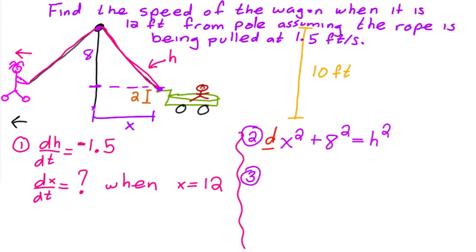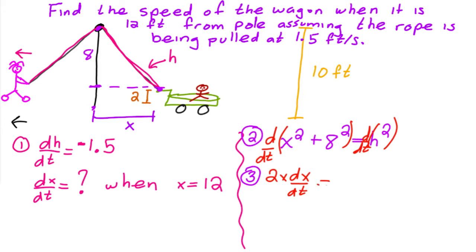Step three: find the derivative of both sides with respect to time. The derivative gives us 2x times dx/dt plus zero, equals 2h times dh/dt.